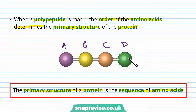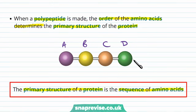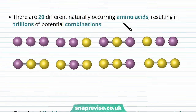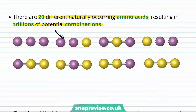Remember, it's not usually only 4 amino acids long. Proteins can be many thousands long — most polypeptide chains are made up of many hundreds of amino acids. So the order and sequence can be very long and complicated. We know there are 20 different naturally occurring amino acids, each with a different R group. Because there are 20, you can imagine there are trillions of potential combinations. If we take just a tripeptide — a peptide of three amino acids —